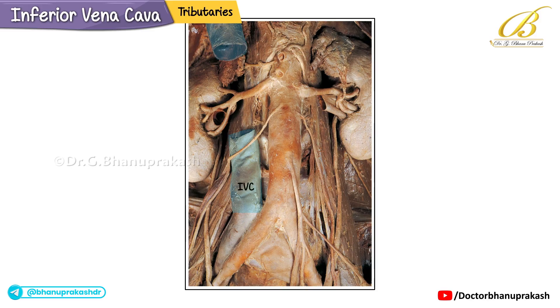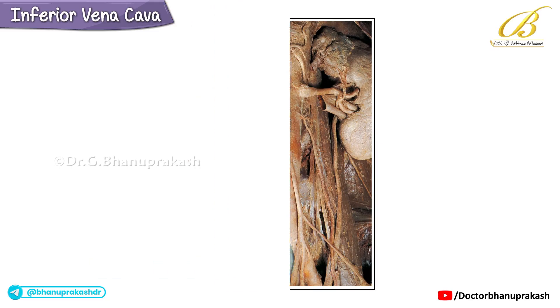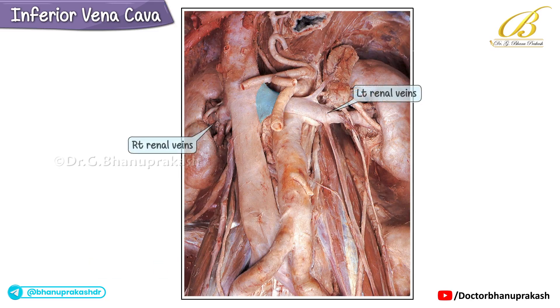The inferior vena cava is formed by the union of the right and left common iliac veins. Both the right and left renal veins drain into the inferior vena cava.